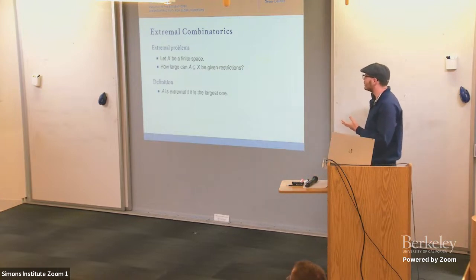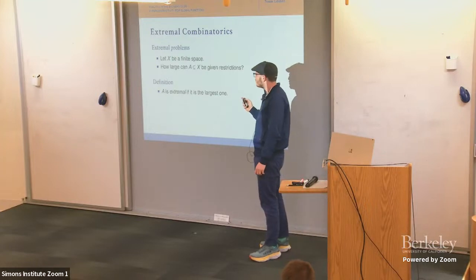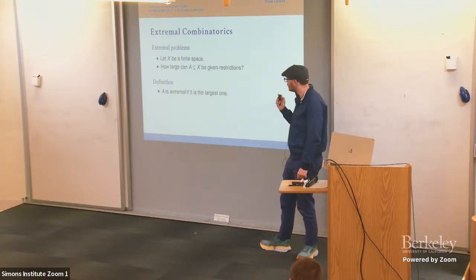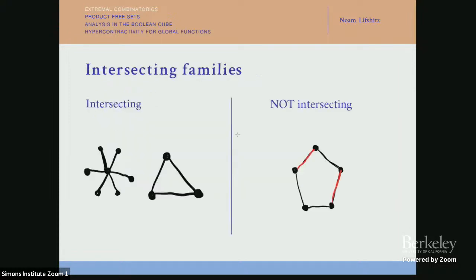The main problem in extremal combinatorics is: we are given some finite space X of objects and want to understand what is the largest subset of X that satisfies some restrictions. We have some restriction on subsets and want to understand what is the extremal set — the largest set that satisfies the restrictions.